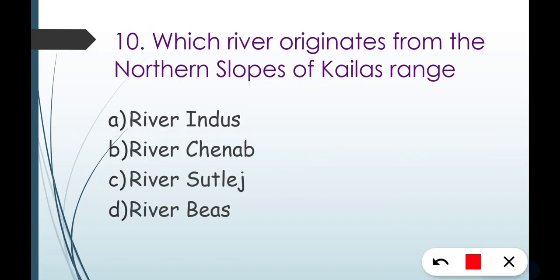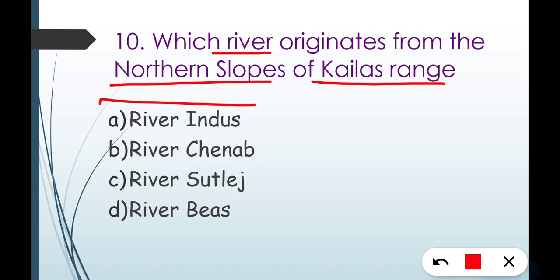Question number ten: which river originates from the northern slopes of Kailash Range? The correct answer is Option A — River Indus. The Indus River originates from Kailash Mansarovar.